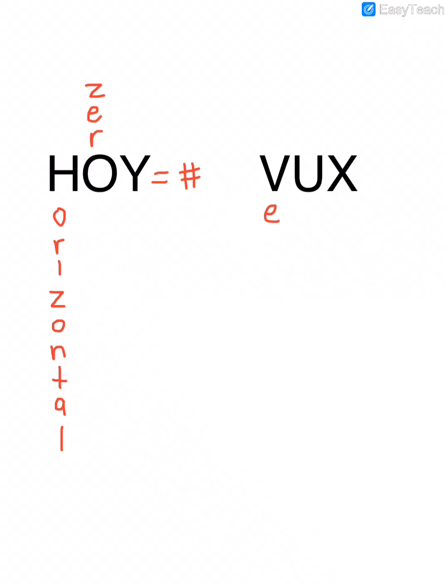VUX stands for vertical lines have a slope that's undefined and they look like x equals some number. This is going to help us in the future also when we have to determine what the slope of the line is. But for now, just remember, HOY is horizontal lines if it's just a y and VUX stands for vertical lines if it's just an x.